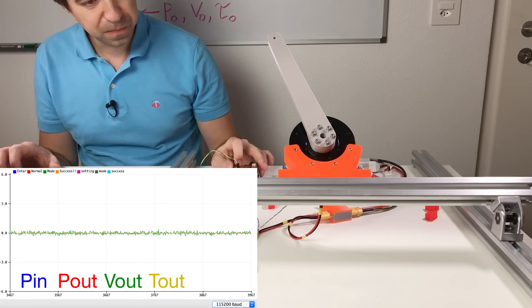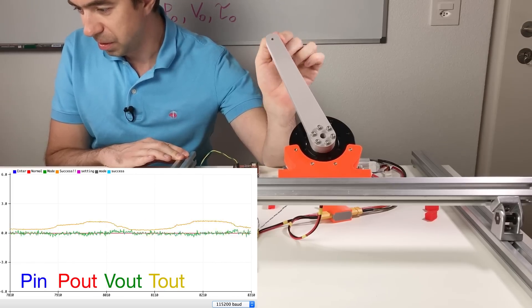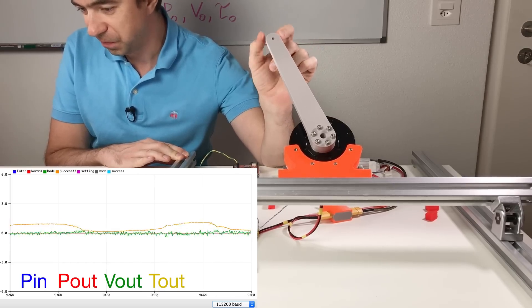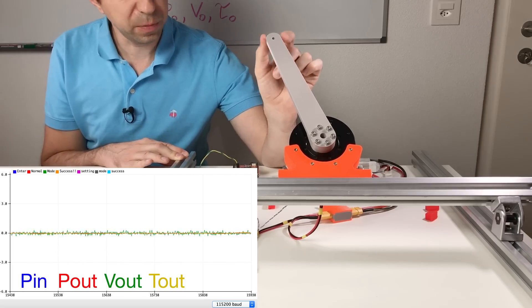Enable controller. And now on the plotter we can see the torque when I apply the force on this arm. There is also backlash. We will measure it later.